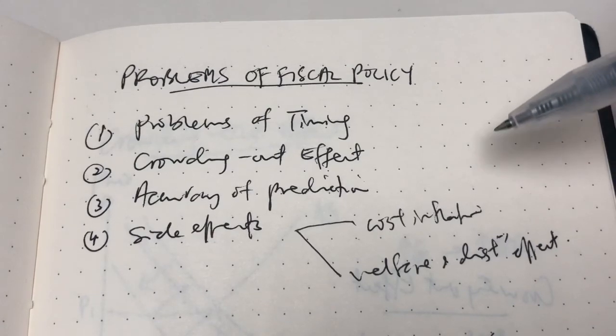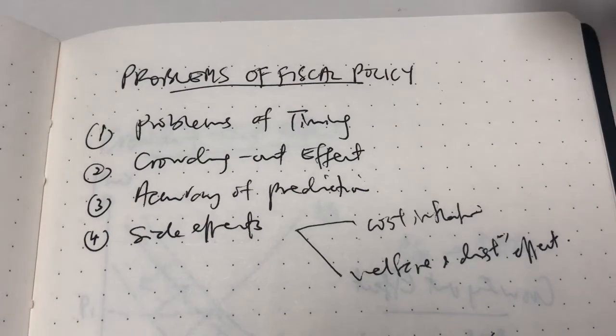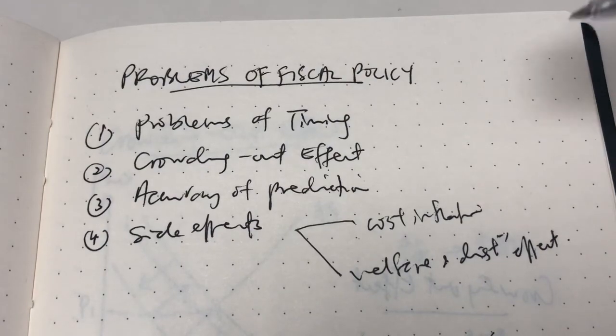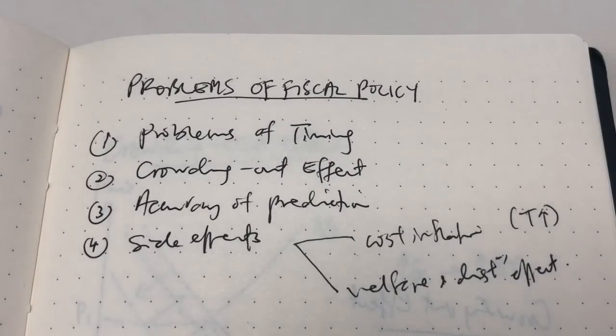The government would implement a contractionary fiscal policy, which is either to reduce G or increase T. Say the government increases T. What happens is when taxation is increased, the point is to actually reduce consumption, right? To cool down the economy.